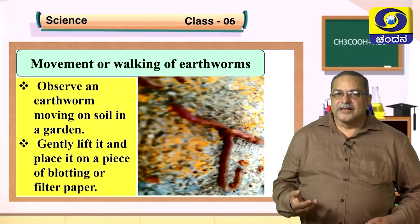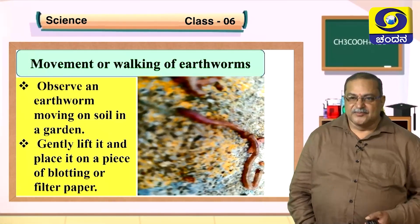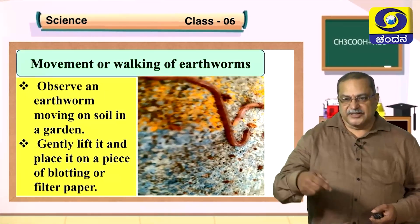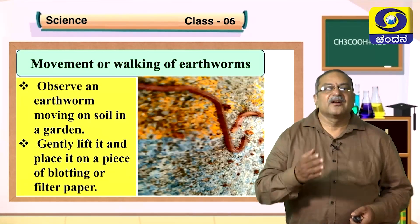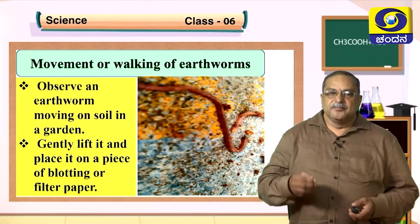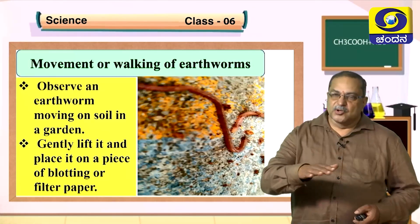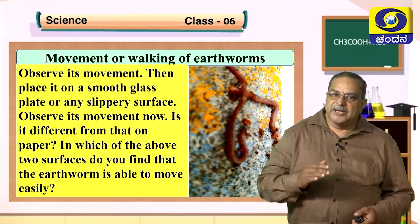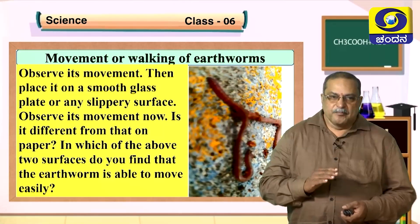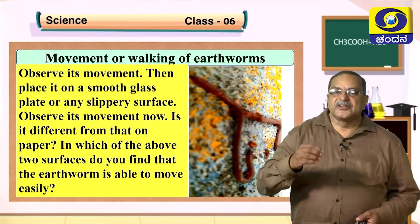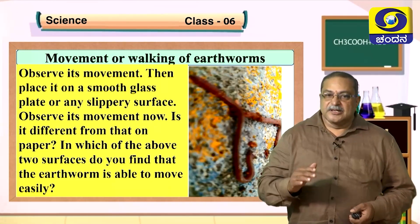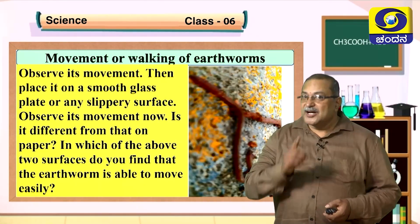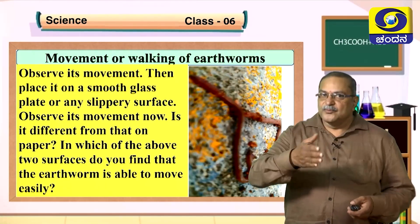Let us look at how the earthworm moves. You can observe the earthworm moving in the garden — gently lift it and place it on blotting paper or filter paper. There is a slimy substance on its body. Then observe its movement, and also place it on a smooth glass plate or slippery surface. Notice: on which of these two surfaces does the earthworm move more easily?